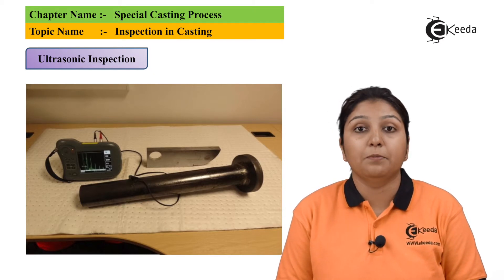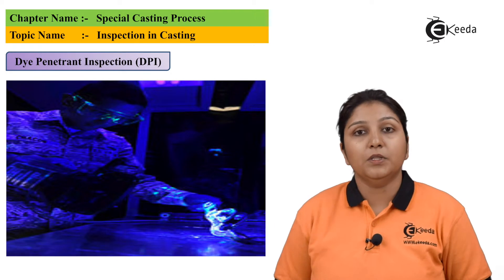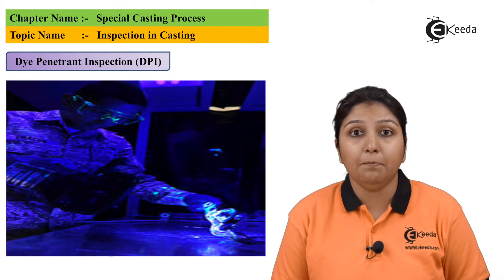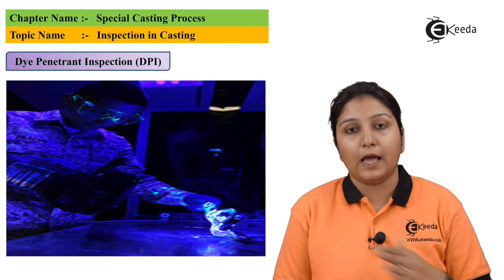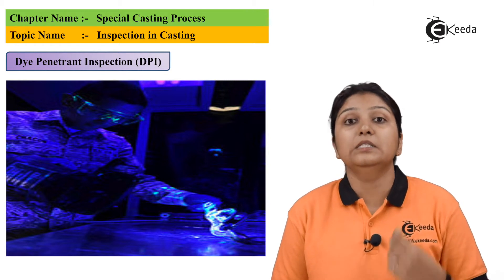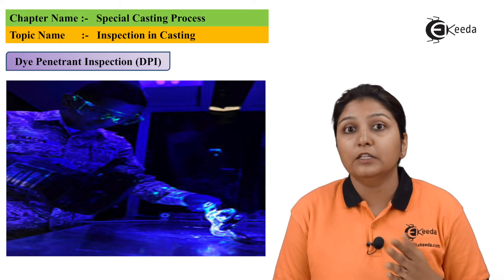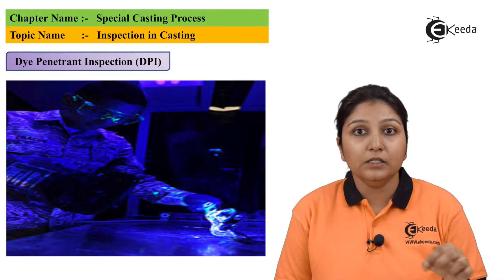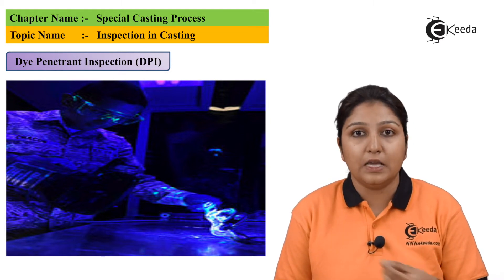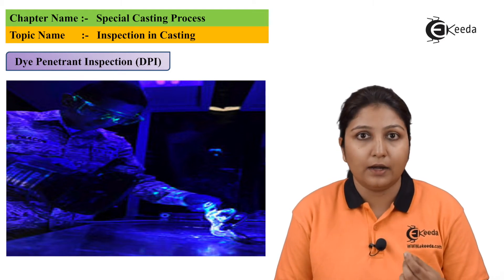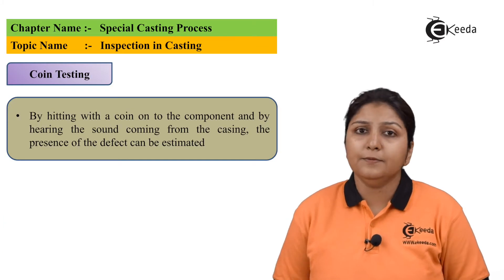The next method is the dye penetration test. In this, you apply a layer of dye that can easily penetrate the surface. Inspection is done by observing open slabs or open sections to find where the dye has entered, allowing you to detect surface defects accurately.